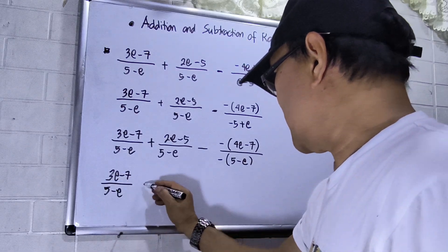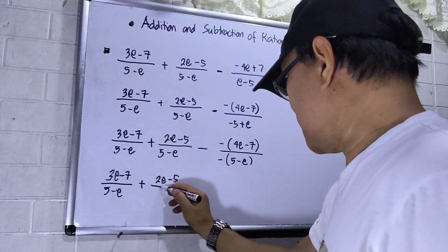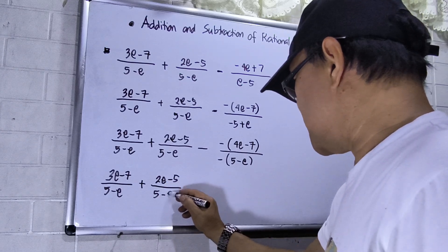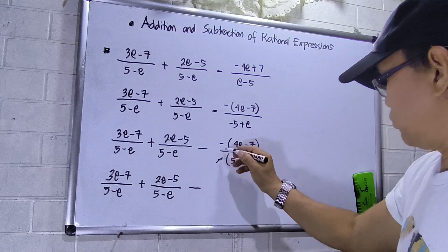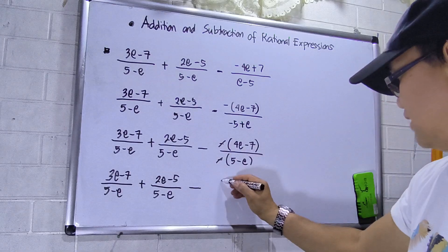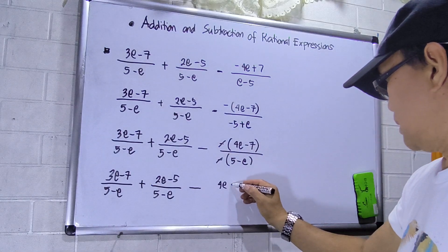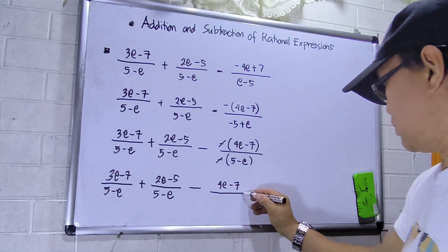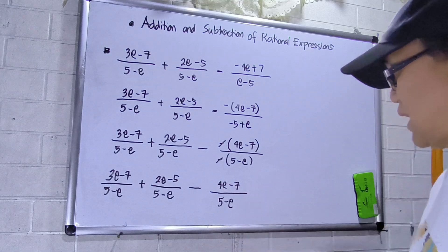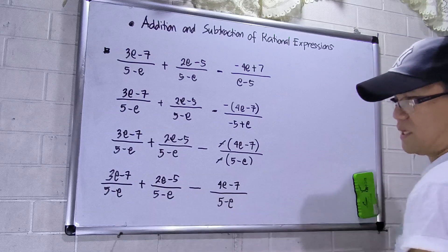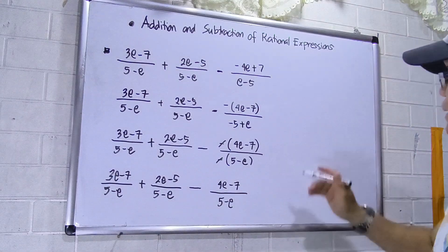So this will be (3e − 7) over (5 − e), plus (2e − 5) over (5 − e), then the two negatives cancel out, leaving (4e − 7) over (5 − e). They are already the same similar fractions, so the LCD will be (5 − e).